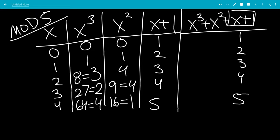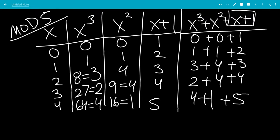Okay, so we're just going to add up these rows right here. So we have 0 plus 0 plus, so let's write down the plus signs. Okay, we have 1 plus 1, 3 plus 4, 2 plus 4, and 4 plus 1.